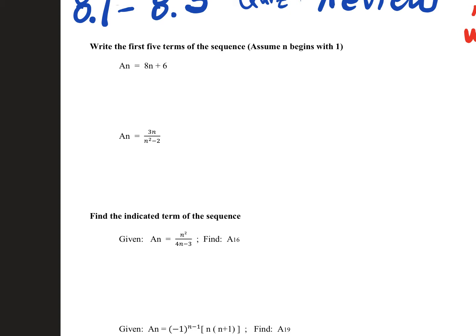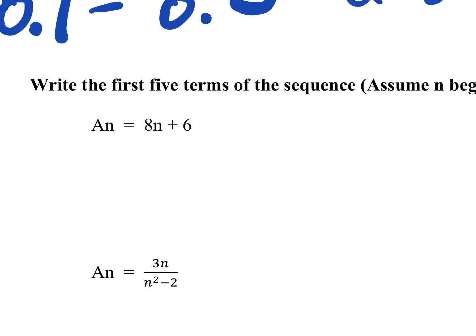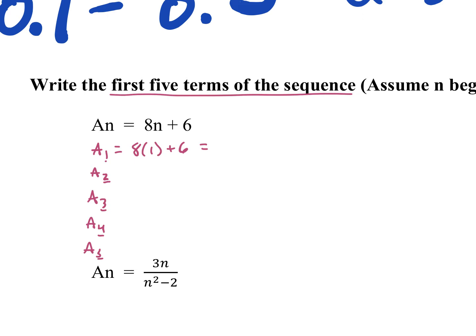I'm going to work through a few others. Whenever it says write the first five terms of the sequence, we just want to plug in a_sub_1, a_sub_2, a_sub_3, a_sub_4, and a_sub_5. We're just plugging in each one of these numbers for n. So we have 8 times 1 plus 6, which gives us 14, and so on.